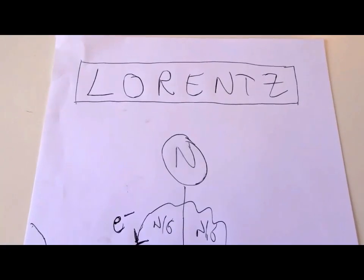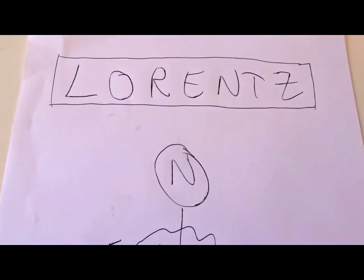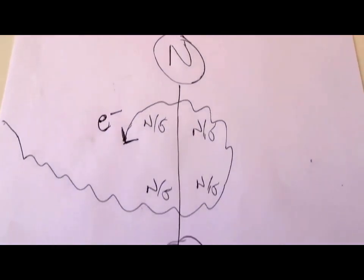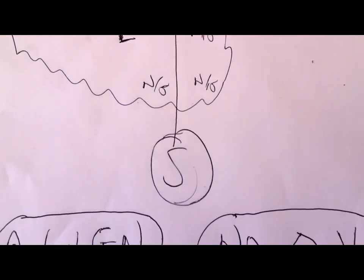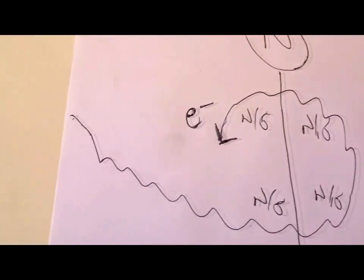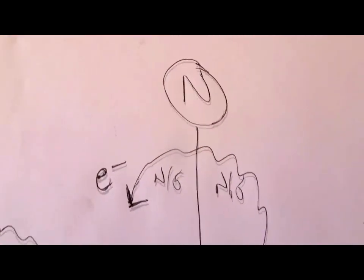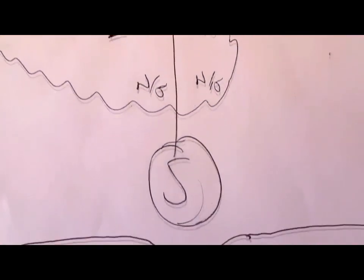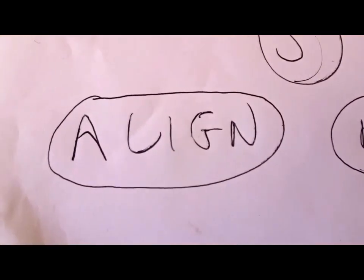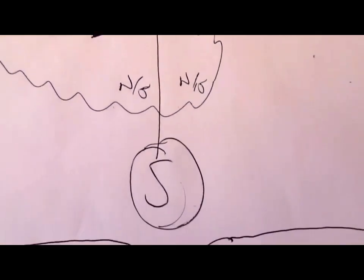One of the most important forces in electromagnetic physics is called the Lorentz force. We have a magnet with a north pole and a south pole, and then an electron, or any other charged ion, curves around the north pole and the south pole, because it has its own magnetic fields which need to align with the north pole and the south pole.